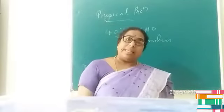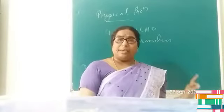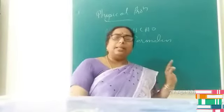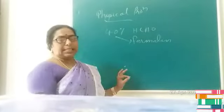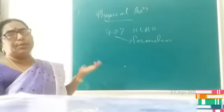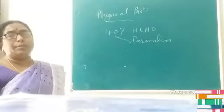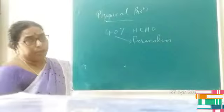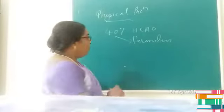Next, ethanone is a volatile liquid. The other members of aldehydes as well as ketones exist as liquids or solids depending on their molecular mass.